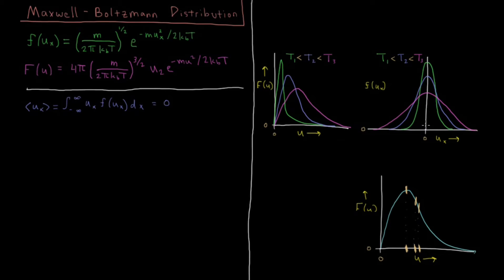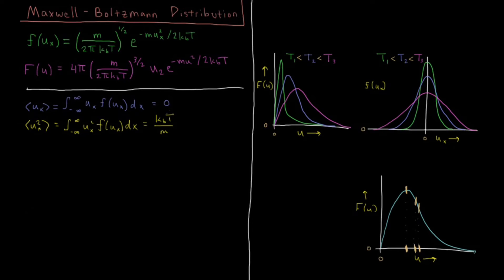That's because it's equally likely for the particle to be traveling to the left as to the right. If it weren't true, you'd have a buildup of particles on one side of the container. What about the average squared velocity? That would be the integral from minus infinity to infinity of ux² times f(ux) dux. If you solve that integral, you get k_B·T over m — increasing linearly with temperature, and equal in the y and z directions as well.